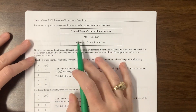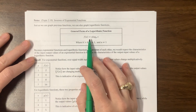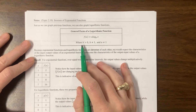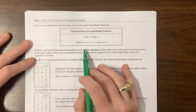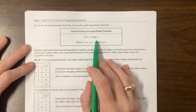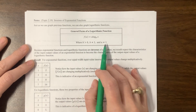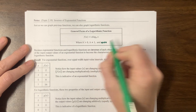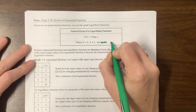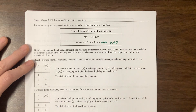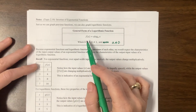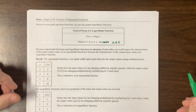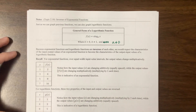The general form is a times log base b of x. They tell us that b has to be greater than 0, so b has to be positive and won't equal 1. It also says a can't equal 1 — I think that's a mistake. I think what they mean is that a can't equal 0, because then if I had 0 times that, I'd just get f of x equal to the line y equals 0.